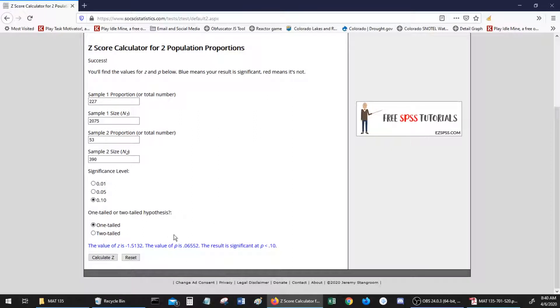It will then calculate our test statistic, negative 1.51 as we found. And notice that the p-value is .06552, which is significant at p less than .10.